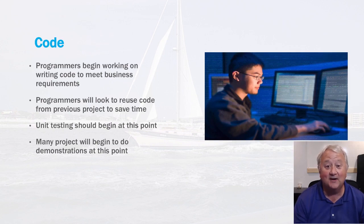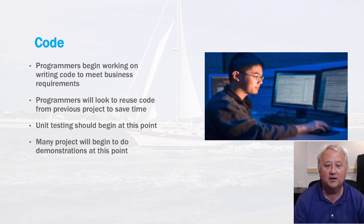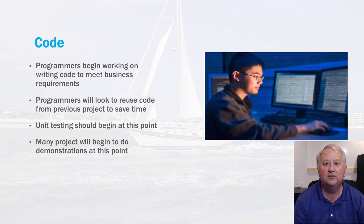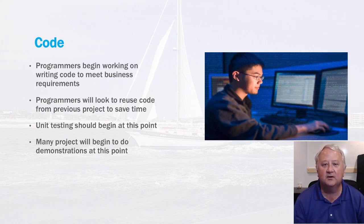The next step is coding — finally we get to write some code after all these other steps. Most beginner programmers want to jump to this step right away and skip all the other steps, but in a large project that's just not possible. Programmers will begin writing code based on the design specifications that were completed, and they'll look to reuse code from previous projects to save time. Unit testing will be built in so that testing can happen in parallel with coding. Many projects will also begin doing demonstrations at this point to show prototypes and early pieces of the software to the customer to make sure everything's functioning properly.